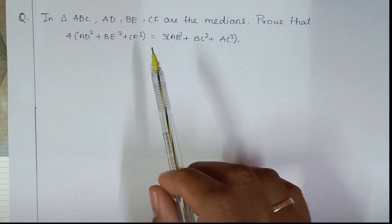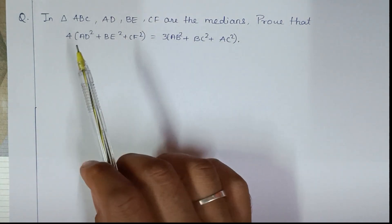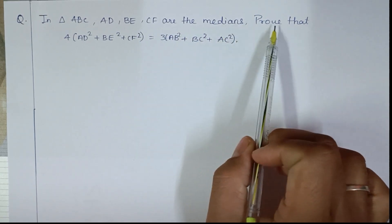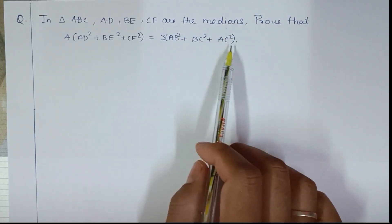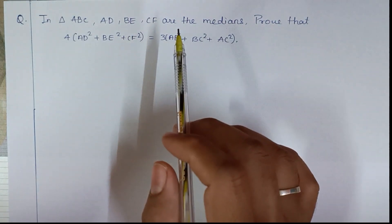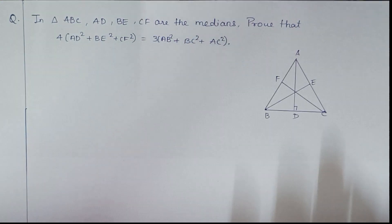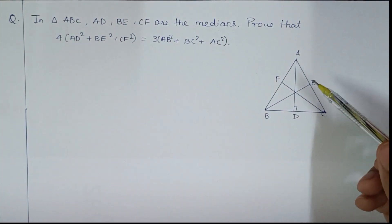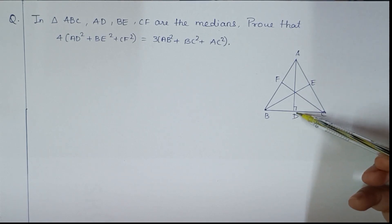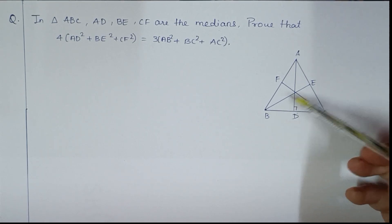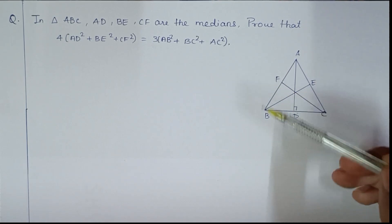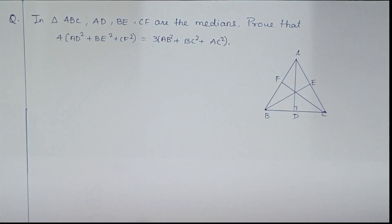Hello students. In this video we are going to solve this question: in triangle ABC, AD, BE, CF are the medians. We have to prove this. Okay, so first of all, we have made a triangle and medians. I have drawn a figure here — triangle ABC where AD is a median, BE is a median, and CF is a median. We have to prove this. Let's start.